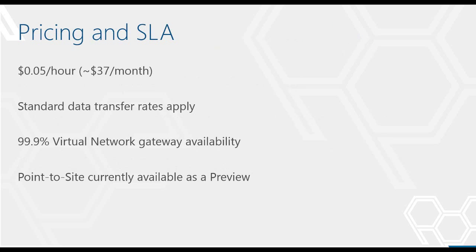Before the demo, let's discuss pricing. The virtual network configuration itself is free. However, once you provision the gateway, the cost is 5 cents an hour, or roughly $37 a month. Standard data transfer rates apply for data crossing the tunnel. The SLA on the gateway on the Windows Azure side is 99.9%. Note that the point-to-site connectivity option is currently in preview, so there is no SLA available just yet.